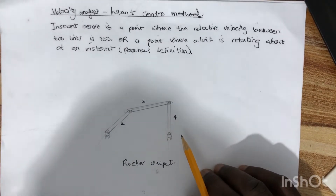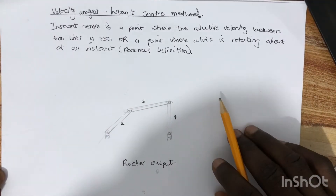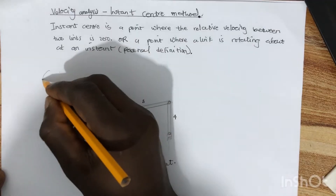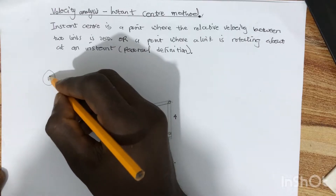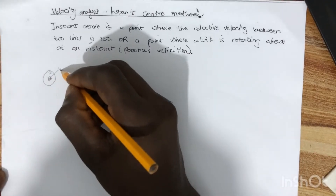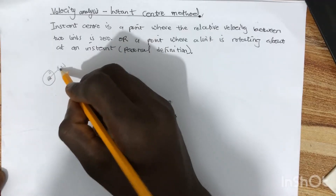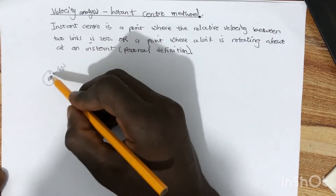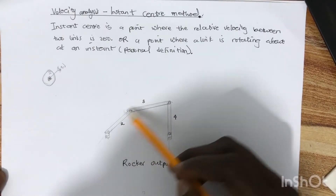By definition, an instant center is a point where the relative velocity between two links is zero. For instance, if we take a gear — the center point where the gear makes a joint with the ground link — let's say the gear is link two and the ground link is link one. So the joint is labeled 1-2, and there is no relative velocity between the ground link one and the gear link two.